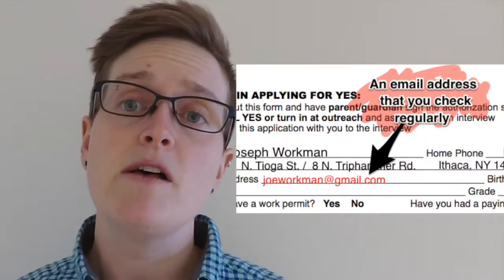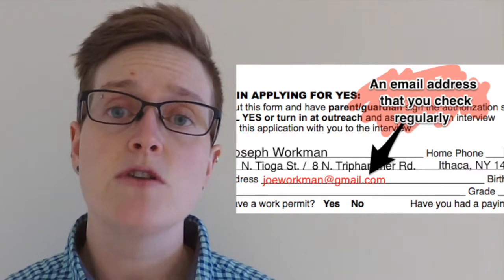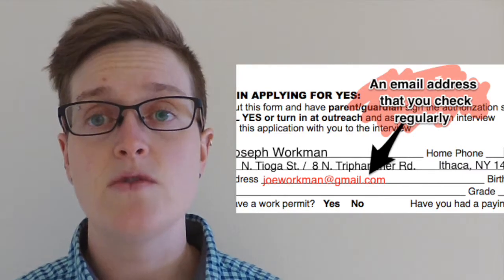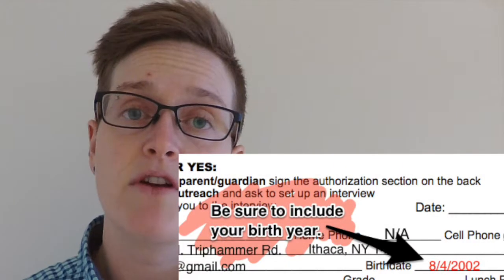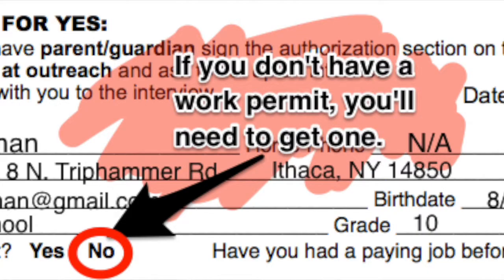For your email address, make sure you write down an email that you check regularly. For your birth date, include the year. For your age, write your current age, and make sure you get a work permit as soon as possible because in order to start working, you need to have that work permit.